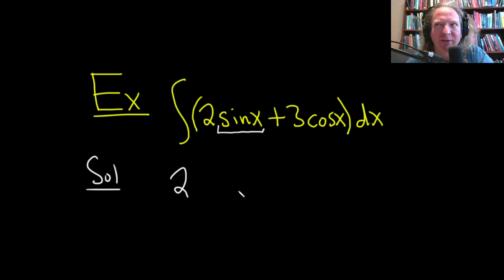What's a function whose derivative is sine? Well, the derivative of cosine is going to give you negative sine. So if you take the derivative of negative cosine, it'll be a negative negative sine, which is sine. So it's going to be negative cosine.